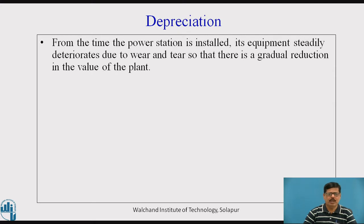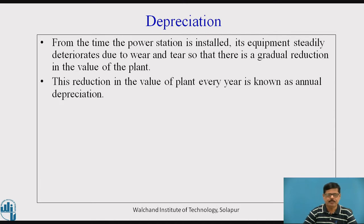Now let us see what is depreciation. From the time the power station is installed, its equipment steadily deteriorates due to wear and tear, so that there is a gradual reduction in the value of the plant. This reduction in the value of the plant every year is known as annual depreciation.